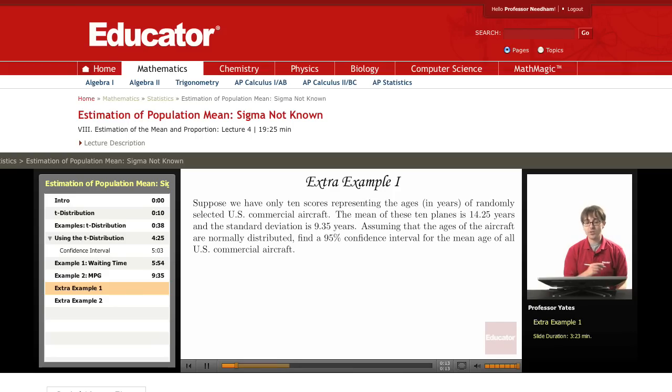So in this first example, suppose we have only 10 scores representing the ages of randomly selected U.S. commercial aircraft. Those ages are in years. The mean of these 10 planes is 14.25 years and the standard deviation is 9.35 years.